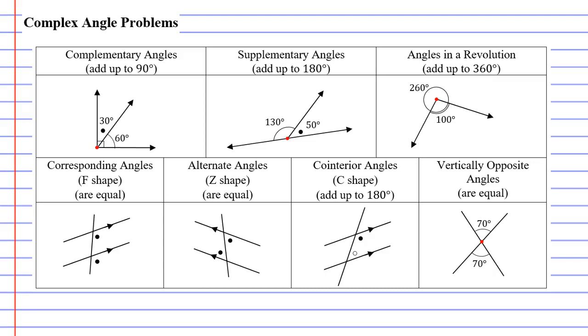Looking in the first row we have our adjacent angles. Firstly we have complementary angles and you'll notice that they have a right angle on them, meaning that when I add the angles up it will equal 90 degrees.